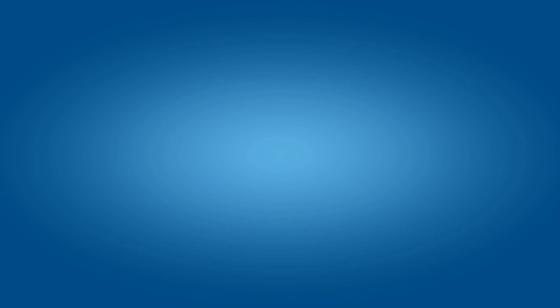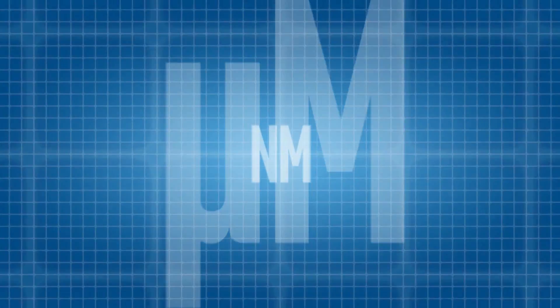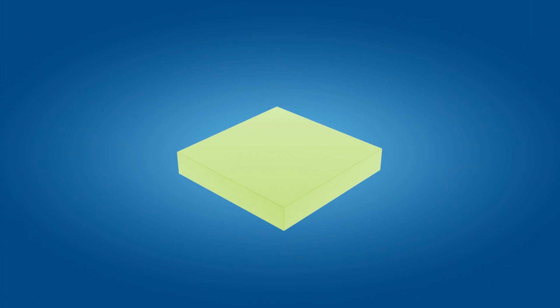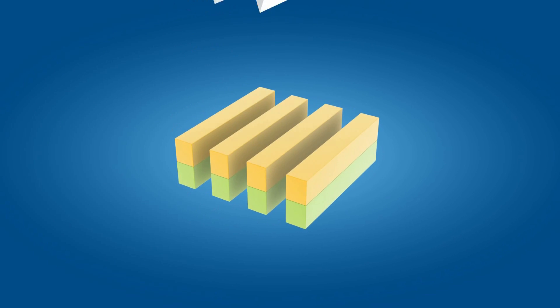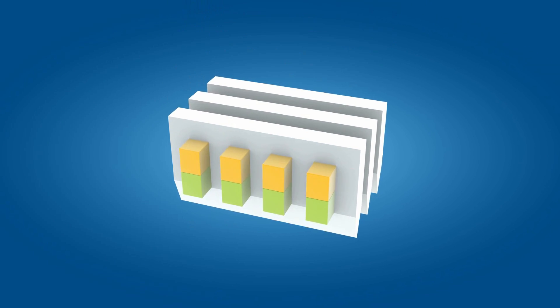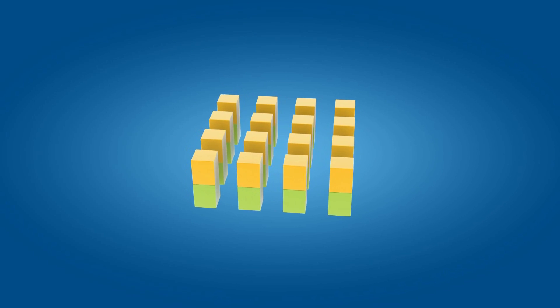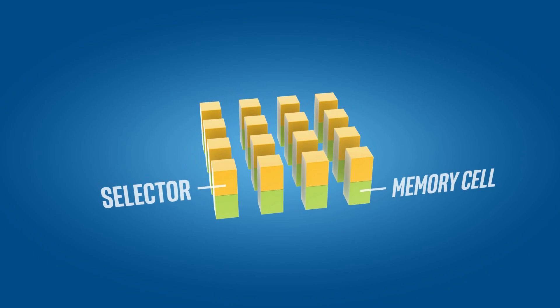So, how'd we do it? To make 3D XPoint inexpensive, we needed to pack lots of capacity into a tiny footprint. We started by slicing sub-microscopic layers of materials into columns, each containing a memory cell and selector.